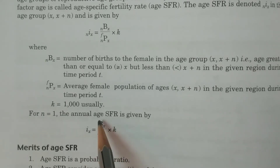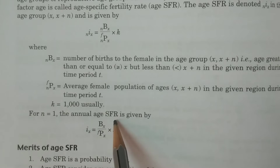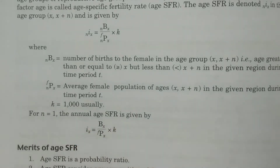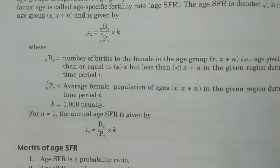If N is equal to 1, this formula becomes IX equals BX divided by FPX into K. It is known as the annual age specific fertility rate, annual age SFR. That is for every year: X to X plus 1, X plus 1 to X plus 2, and so on — for example 15 to 16, 16 to 17, etc.